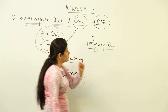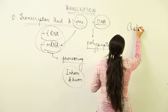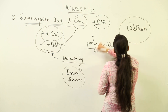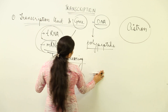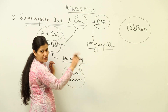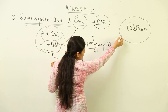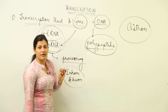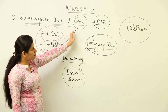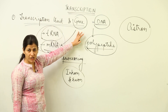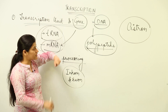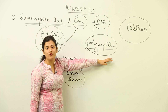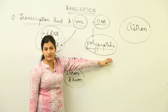Before that, there is one more term: cistron. What is cistron? Cistron is that part of DNA which forms the polypeptide. You have to remember this — we use it interchangeably with gene, but gene is not that specific. Cistron is that sequence of DNA which results in the formation of a polypeptide as a result of protein synthesis.